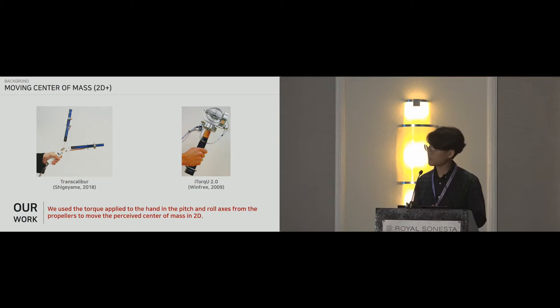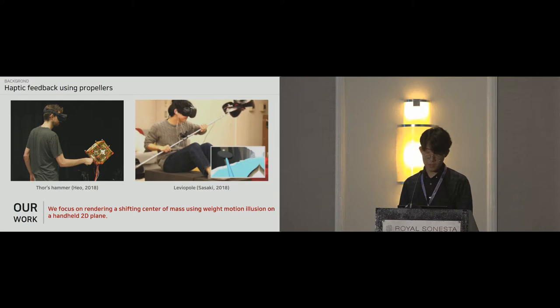Now, in terms of moving the center of mass in more than one dimension, there have been some interesting efforts, such as Transcalibur, which used two pivoting rails that moved physical weights in two dimensions, and itorque U2.0, which used a gyro effect to change the center of mass of the device in a continuously changing direction for mid-air twisting feedback. In our work, we used the torque applied to the hand in the pitch and roll axes from the propellers to move the perceived center of mass in 2D.